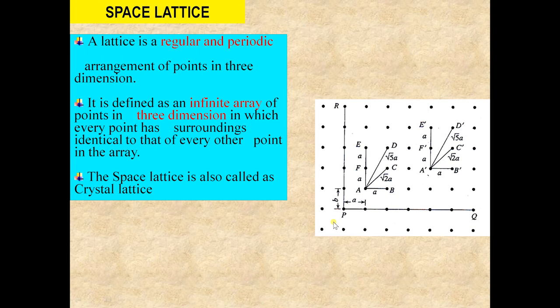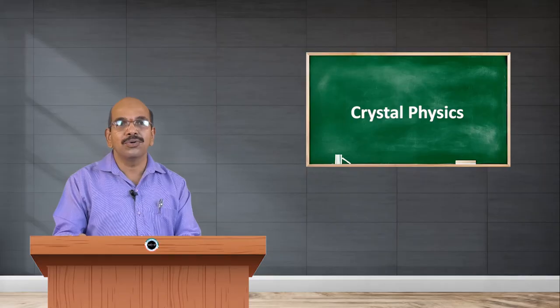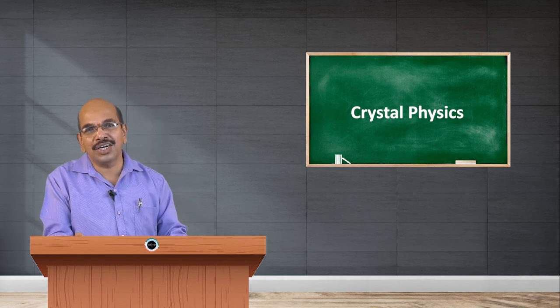In order to analyze the crystal structure of a crystal, we need a reference point and reference axes. For this purpose, we use the space lattice, which is a regular and periodic arrangement of points in three dimensions. These are imaginary points with respect to which we analyze the positions of atoms or molecules in a crystal. The space lattice is defined as an infinite array of points in three dimensions in which every point has surroundings identical to that of every other point. It is also known as the crystal lattice.